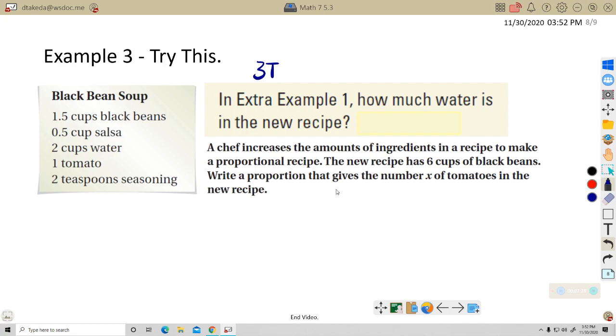See if you can do this one. A chef increases. Okay, so now, again, the recipe, the new recipe is 6 cups of black beans. They want to know how much water is in the new recipe. And see if you can do it mentally. And if you can't, that's okay. Let's try it.